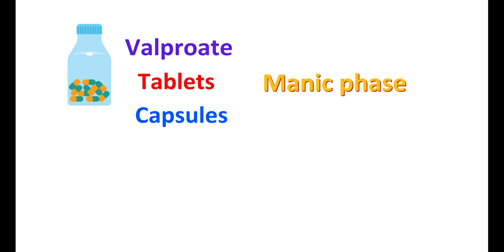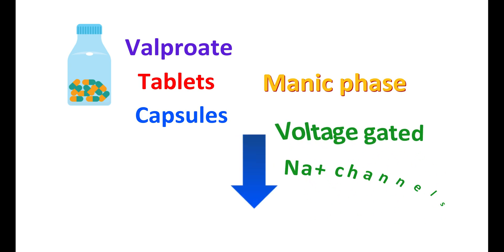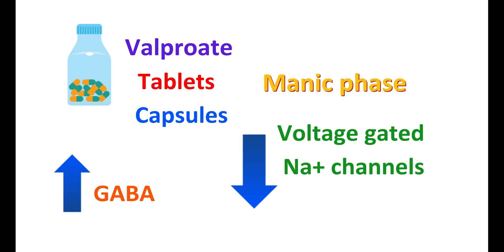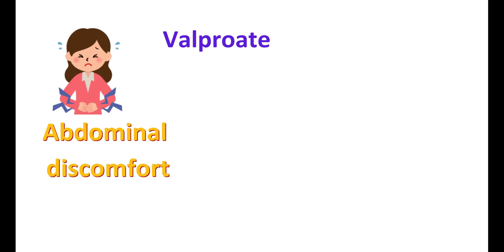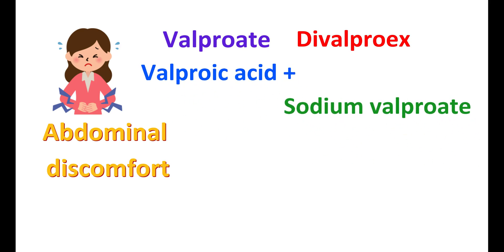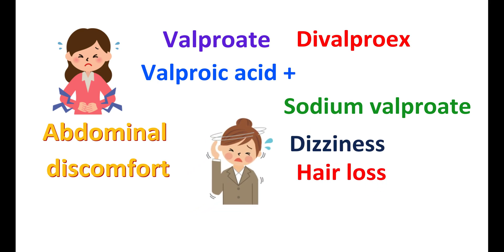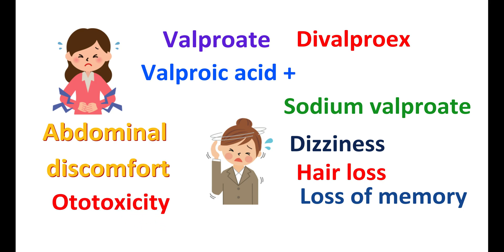Valproate acts by multiple mechanisms: it blocks voltage-gated sodium channels, increases GABA activity, and reduces glutamate action, thereby reducing neuronal excitation. However, valproate can produce serious side effects, particularly abdominal discomfort. To minimize this, it can be given as divalproex, a mixture of valproic acid and sodium valproate in a 1:1 ratio, which has fewer gastric side effects. Other side effects include dizziness, hair loss, memory loss, and ototoxicity leading to hearing loss. Valproate can be used as an alternative to lithium for long-term treatment of mania.